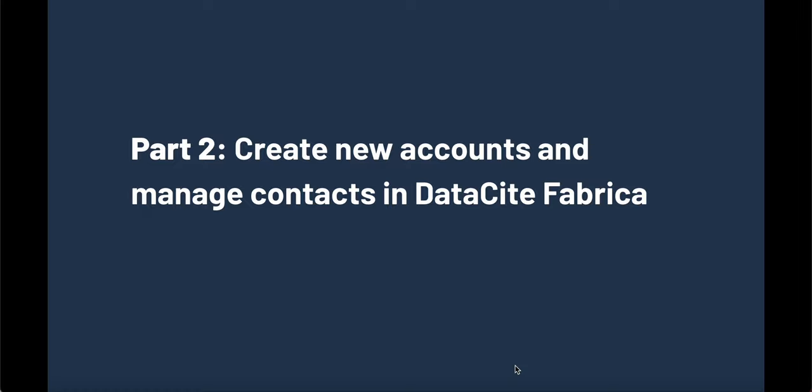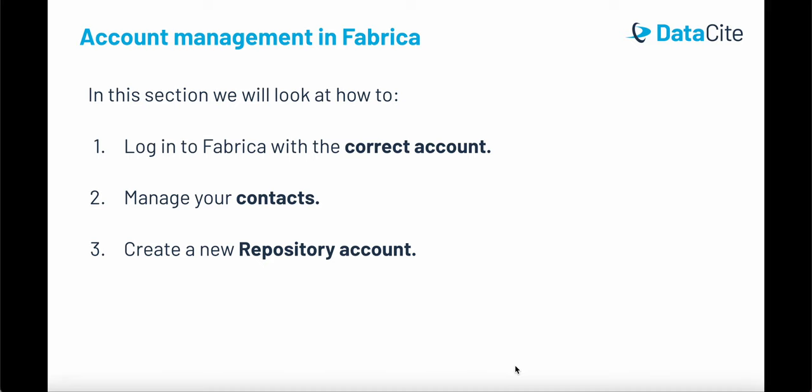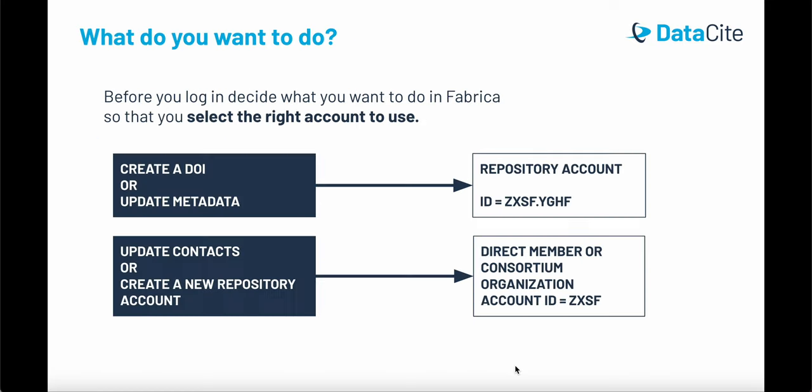Part two: create new accounts and manage contacts in Datasite Fabrica. In this section, we will look at how to log into Fabrica with the correct account, manage your contacts, and create a new repository account. Before you log into Fabrica, you need to decide what you want to do so that you select the right account to use. If you want to create a DOI or update metadata, you should make sure you're using a repository account to log in. If you want to update contacts or create a new repository account, make sure you're using a direct member or consortium organization account to log into Fabrica.